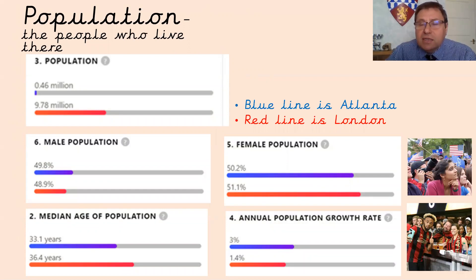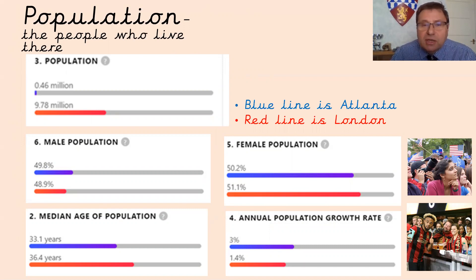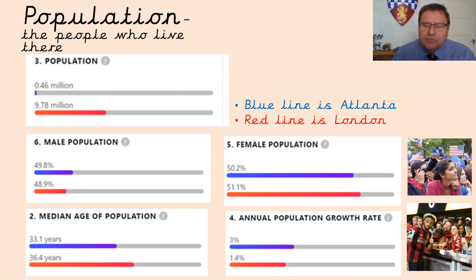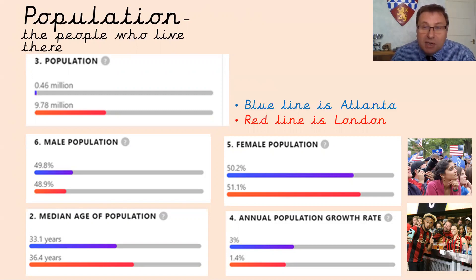Look at each slide in turn — the blue line is Atlanta and the red line is London — and see what it tells us about the two cities, what's the same and what's different. This slide is about population. Pause and talk to someone about what it tells us. The obvious one: Atlanta has a population of 0.46 million compared with just under 10 million for London — so London is obviously a much, much bigger place than Atlanta.